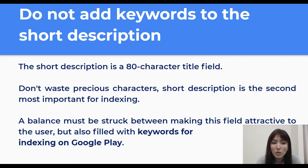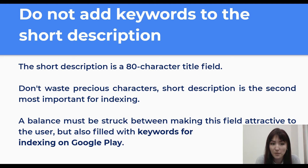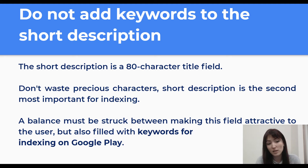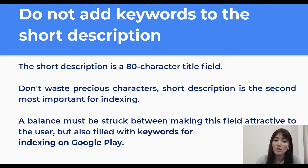Do not skip adding keywords to the short description. The short description is an 80-character field. Don't waste precious characters — the short description is the second most important field for indexing. A balance must be struck between making this field attractive to the user but also filled with keywords for indexing on Google Play.